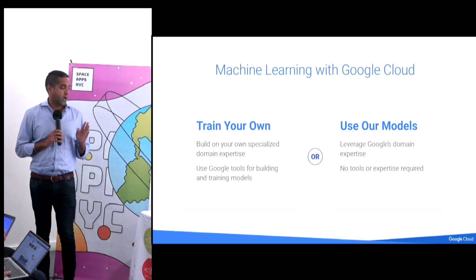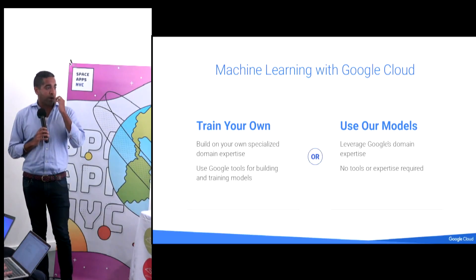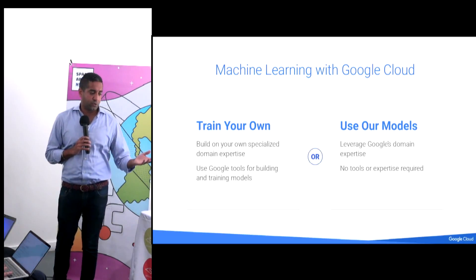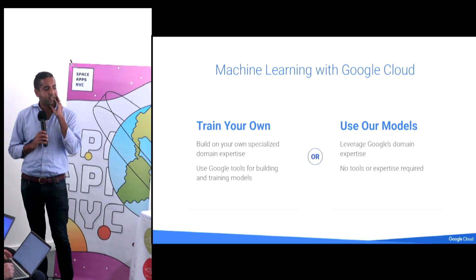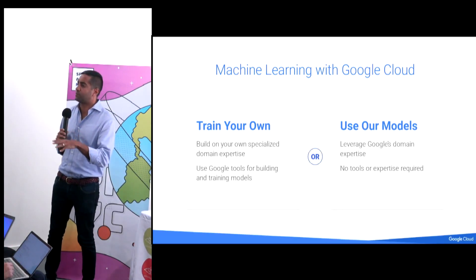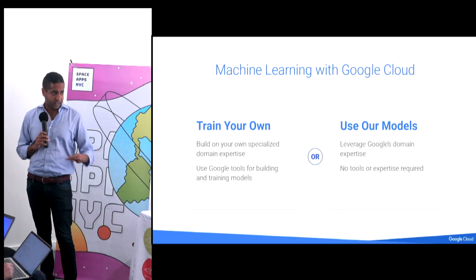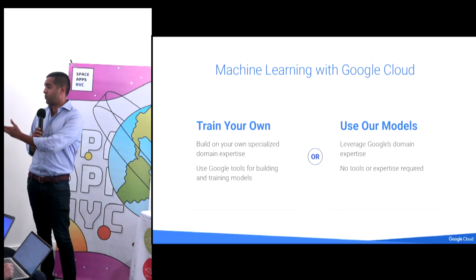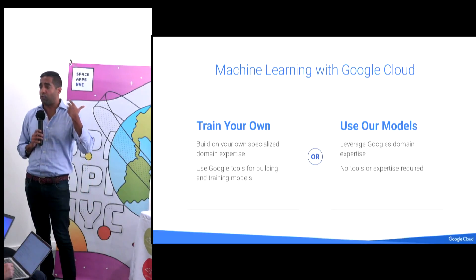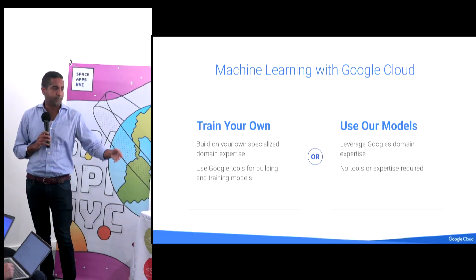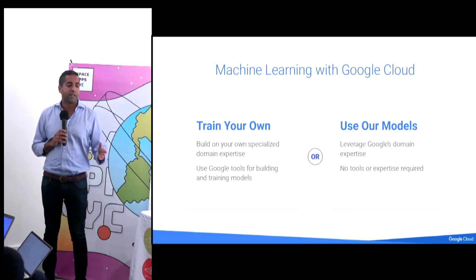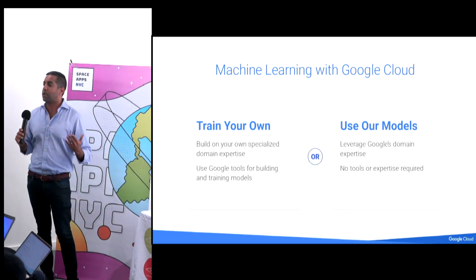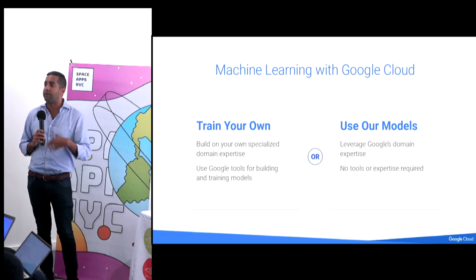There are two ways to build machine learning. One is to train your own data — Google has open-sourced TensorFlow and we have the Google Machine Learning Engine, used mainly by data scientists. They can provide their own data sets, use our computing platform, and write models to train their machines. The other way is to use our pre-built models — no tools needed, no expertise required — and you can get all the power that large tech companies have inside your apps.